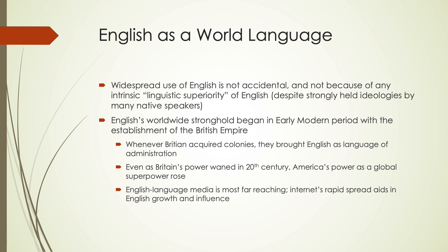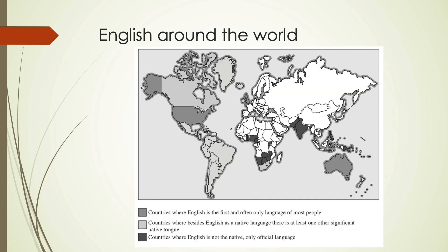Looking at English around the world, the darker gray areas are countries where English is the first and often the only language — places like Australia, the United States, and England. Light gray areas show where English is a native language alongside at least one other significant language: Canada, most of Latin America, New Zealand (which also has Māori), Ireland (which also has Irish). And in formerly colonized areas — the Pacific, India and related countries, throughout Africa — English may be a second language or an official language that was never really widely spoken by the population, but was just the language of colonizers.